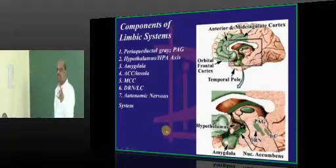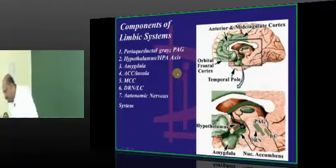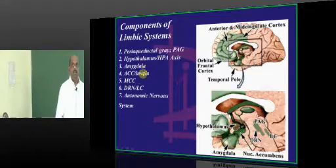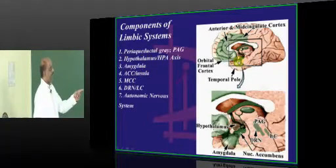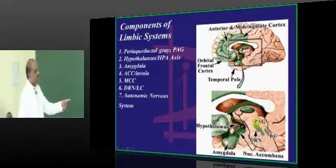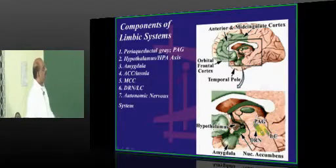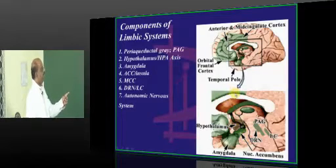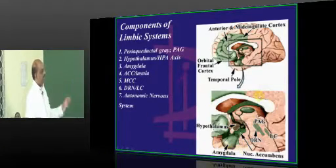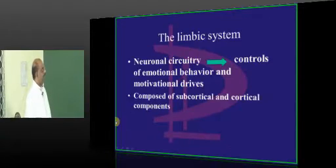What constitutes the limbic system is a very important question. We have the periaqueductal gray, hypothalamus, amygdala, and the autonomic nervous system. These are all components of the limbic system.